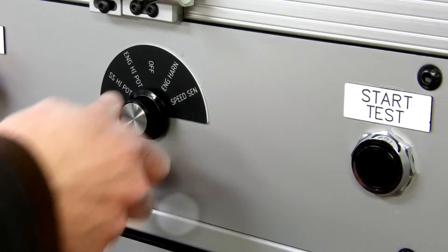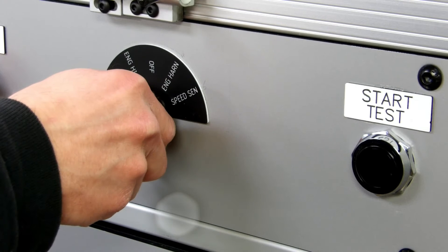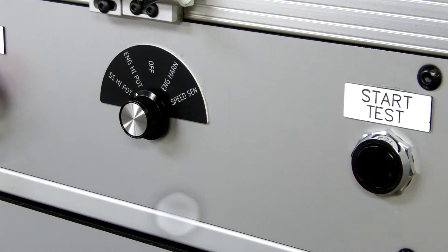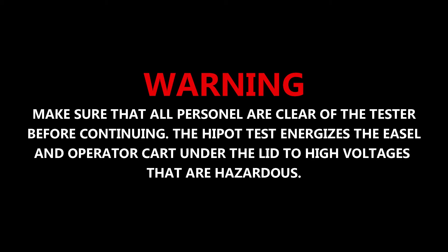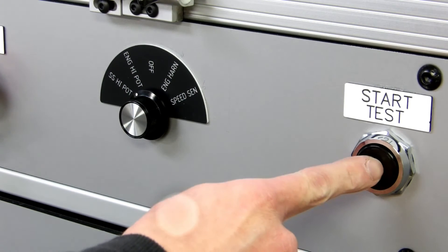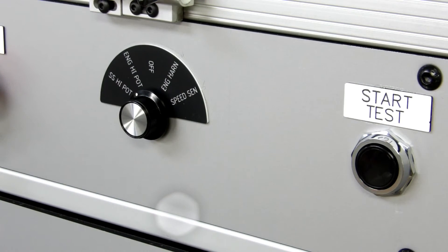Back at the operator console, change the selector switch to ENG high pot. This will change the software to the high pot screen warning. Make sure that all personnel are clear of the tester before continuing. The high pot test energizes the easel and operator cart under the lid to high voltages that are hazardous. Press the start button beside the selector switch to start the high pot test.